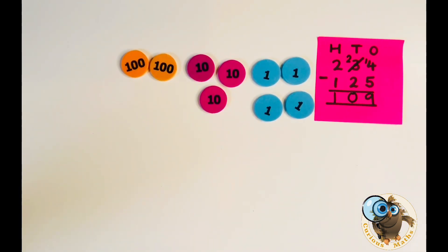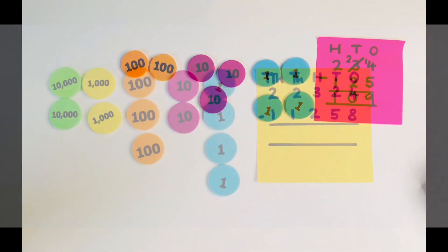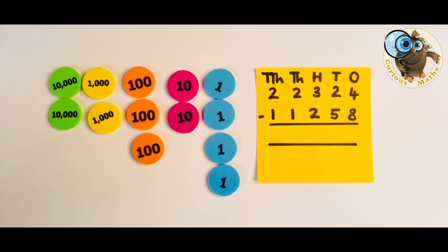So it would look very similar if we use place value counters. Once again we just represent the larger number in this calculation and we're going to take the 125 away and once again you may like to do the write at the same time as the build. When the numbers get bigger I think it's equally as important to still go through the build it, draw it, write it, say it method especially if you've got more than one column which requires exchange.